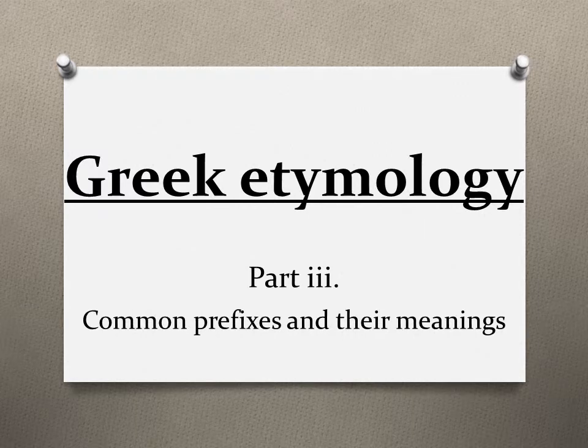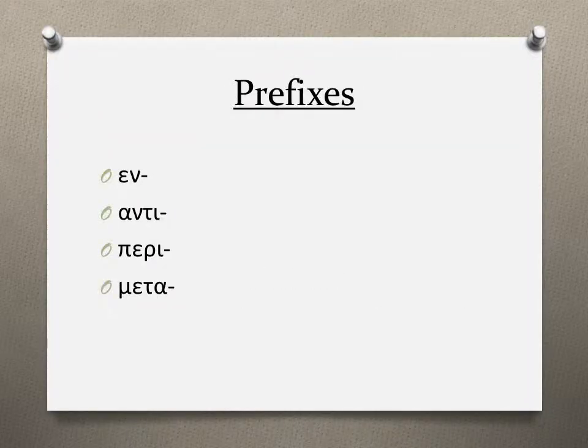Welcome to the third and final part of Modern Greek Language Etymology Prefixes. Today we'll be studying together the following prefixes: EN, ADI, PERI, and META. For those of you joining for the first time, please visit the links below for the first two videos you have missed.